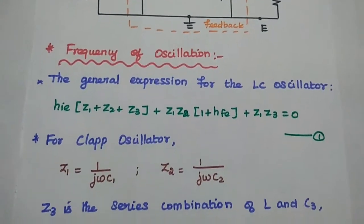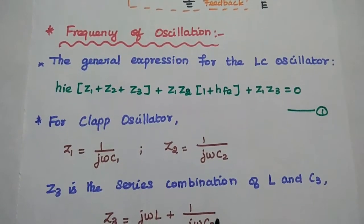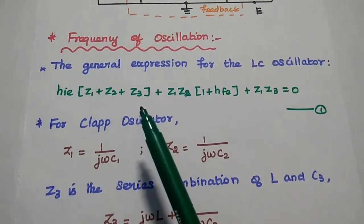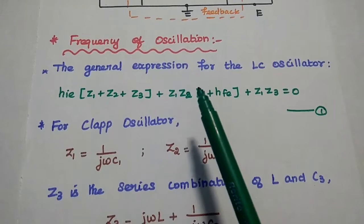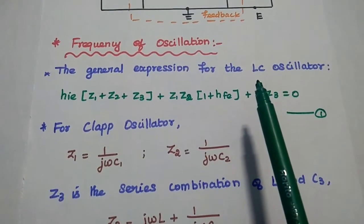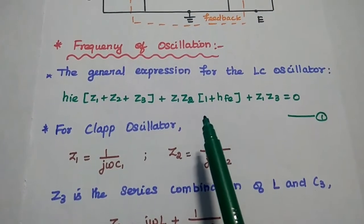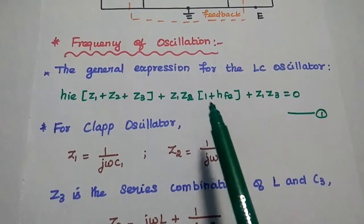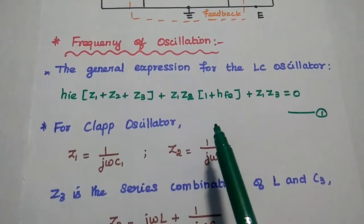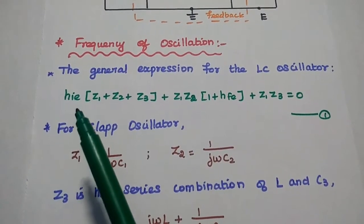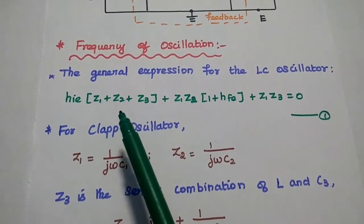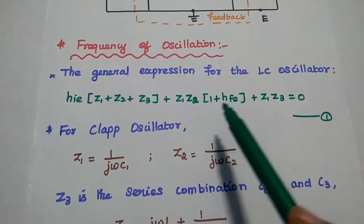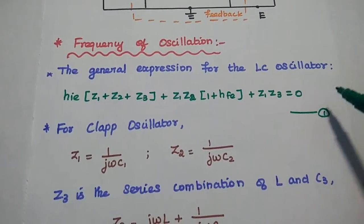Next, we are going to derive the frequency of oscillation for the CLAP oscillator. This derivation is very important. We use the general expression for any LC oscillator: HIE·(Z1 + Z2 + Z3) + Z1·Z2·(1 + HFE) + Z1·Z3 = 0. Consider this as the first equation.